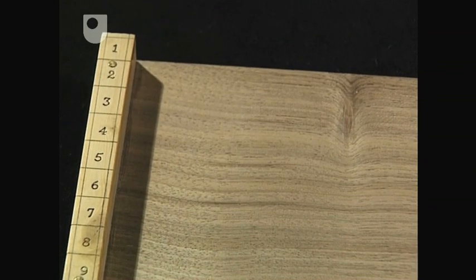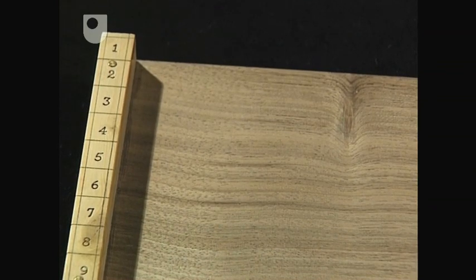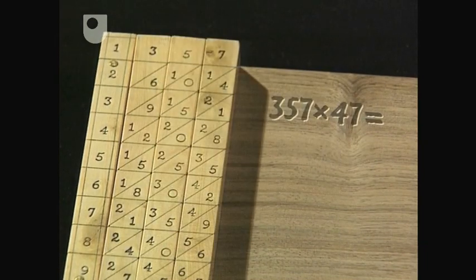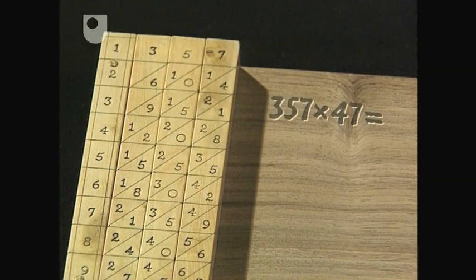This 20th century replica has a multiplier rod fixed permanently in place. For this multiplication, just three rods are needed: the 3, the 5, and the 7.